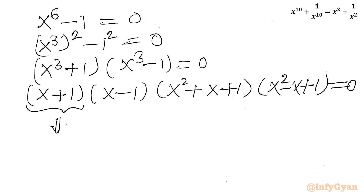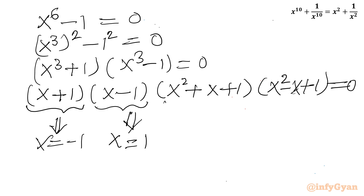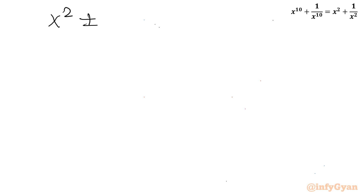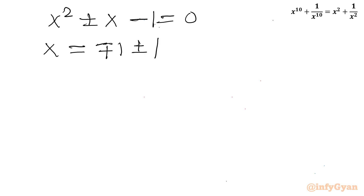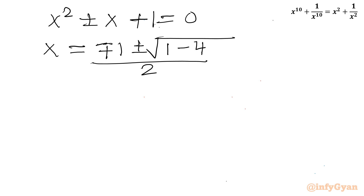From x + 1 = 0, x = -1 — a repeated solution. From x - 1 = 0, x = +1 — also repeated. Now applying the quadratic formula to x^2 ± x + 1 = 0: x = (-±1 ± √(1 - 4)) / 2 = (-±1 ± i√3) / 2.